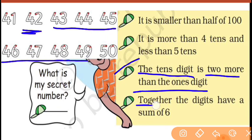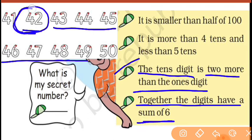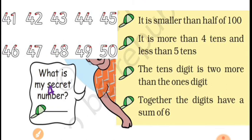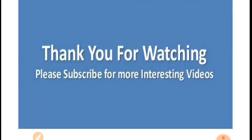Next clue: together the digits have a sum of 6. 4 plus 2 equals 6 — yes! So finally the number is 42. This was about secret numbers. You will note down all this in your notebook and prepare for your exam. Take care, thank you.